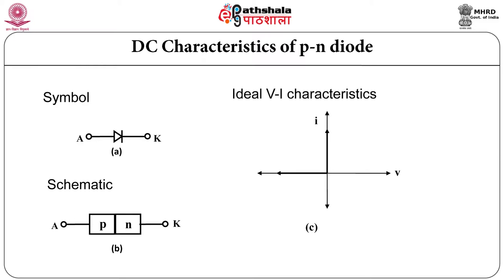The ideal characteristics shows that at infinite negative voltage diode current is zero, and when it exceeds zero volt current may be infinite if it is allowed. But this is the ideal condition.